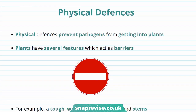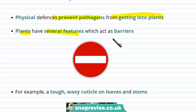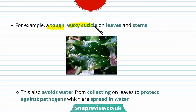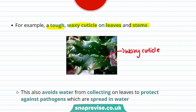Plants have physical defences to protect against pests and pathogens. Physical defences prevent pathogens from getting into plants — plants have several features which act as barriers. For example, plants have a tough waxy cuticle on leaves and stems. The waxy cuticle covers the epidermal cells on most parts of the plant that are above ground. It prevents water loss but also prevents pathogens from reaching the epidermal layer, which reduces infection.